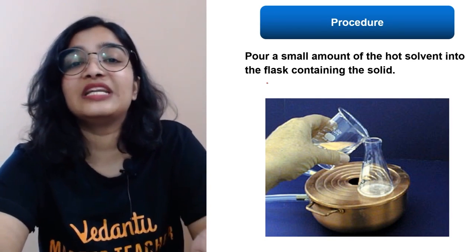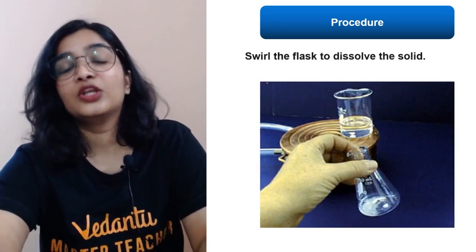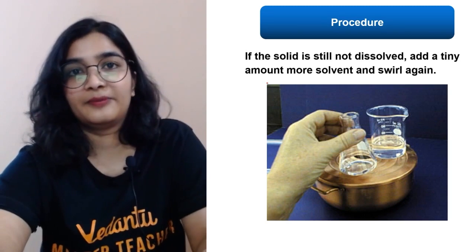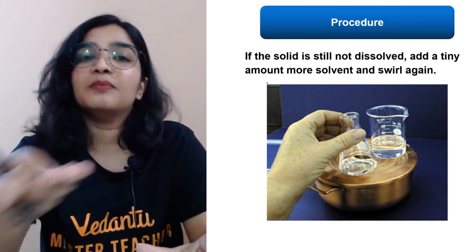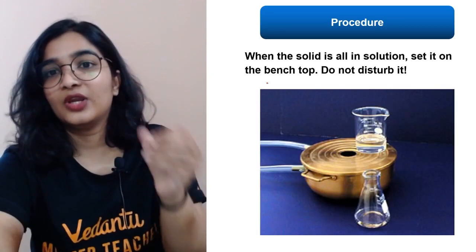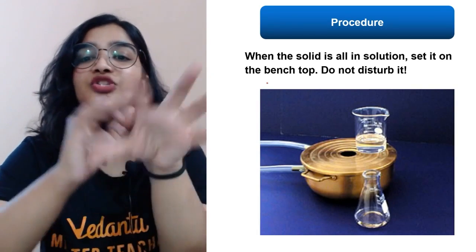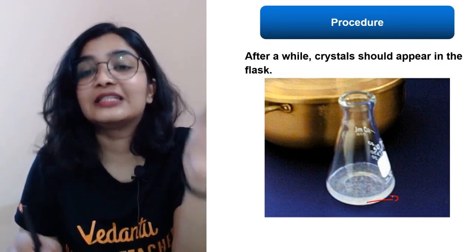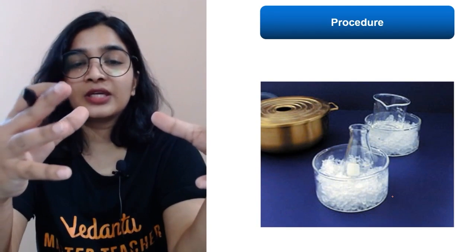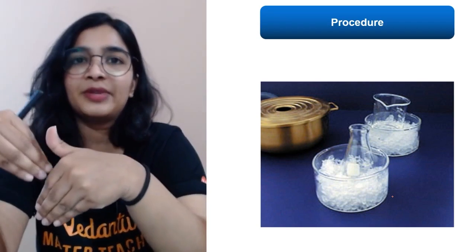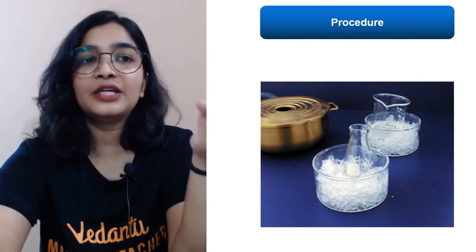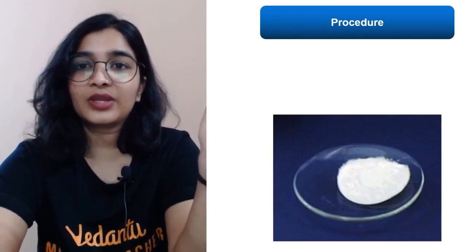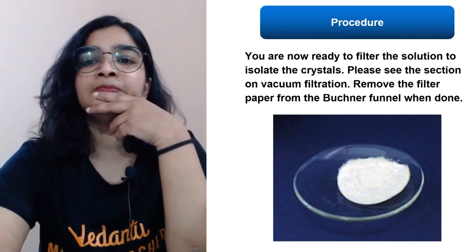Add a small amount of hot solvent into the flask containing the solid so it dissolves. Make sure all the solute has dissolved; if not, add more solvent and heat again. Once everything is dissolved, keep it somewhere undisturbed. After a while, crystals will form. In the lab, to decrease the temperature quickly and trigger crystal formation, we place the container in an ice bath.